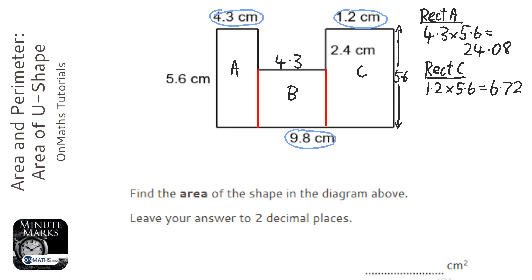Now looking at the height. The total height is 5.6, and the bit I don't want is the 2.4 here. So I'm going to do 5.6 take away 2.4, and that leaves me with 3.2.